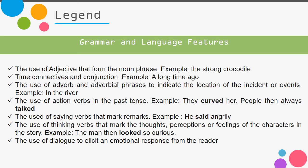Action verbs, saying verbs, and thinking verbs are all used in past tense form (verb 2), because legend stories happened in the past — so we use simple past to indicate that it refers to the past.